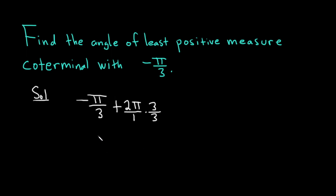So this becomes negative pi over 3 plus 3 times 2 pi is 6 pi, and then this is also over 3.